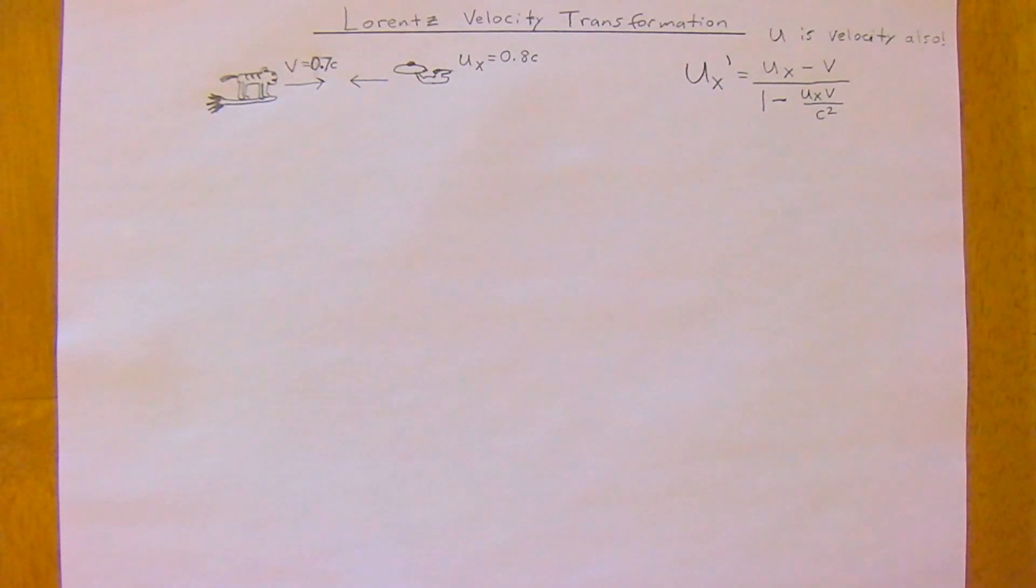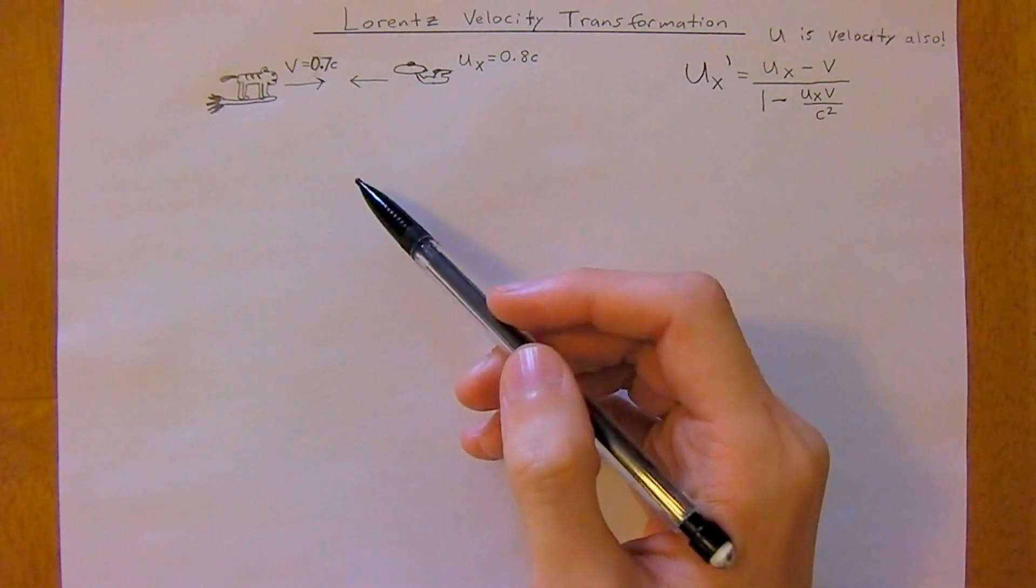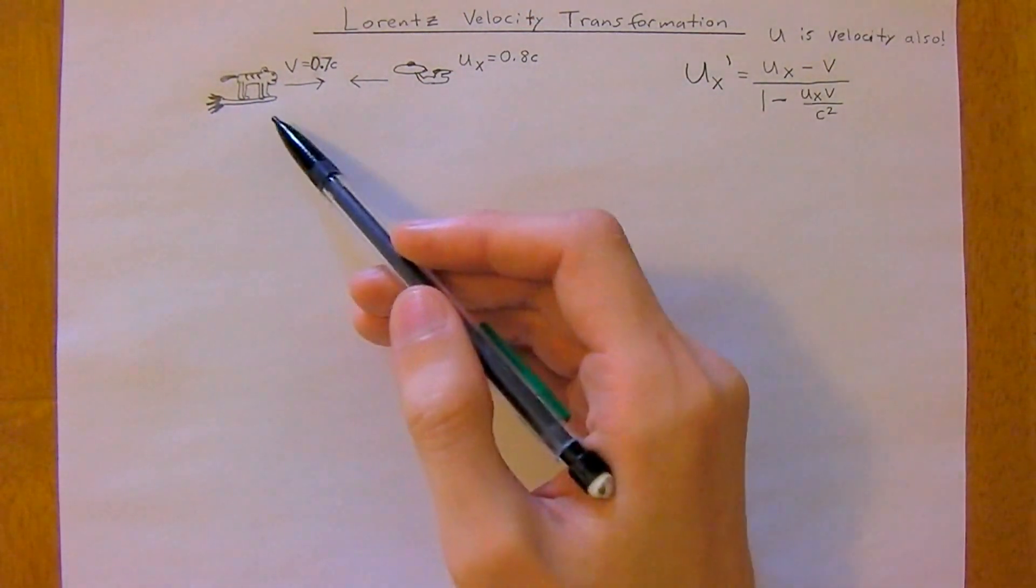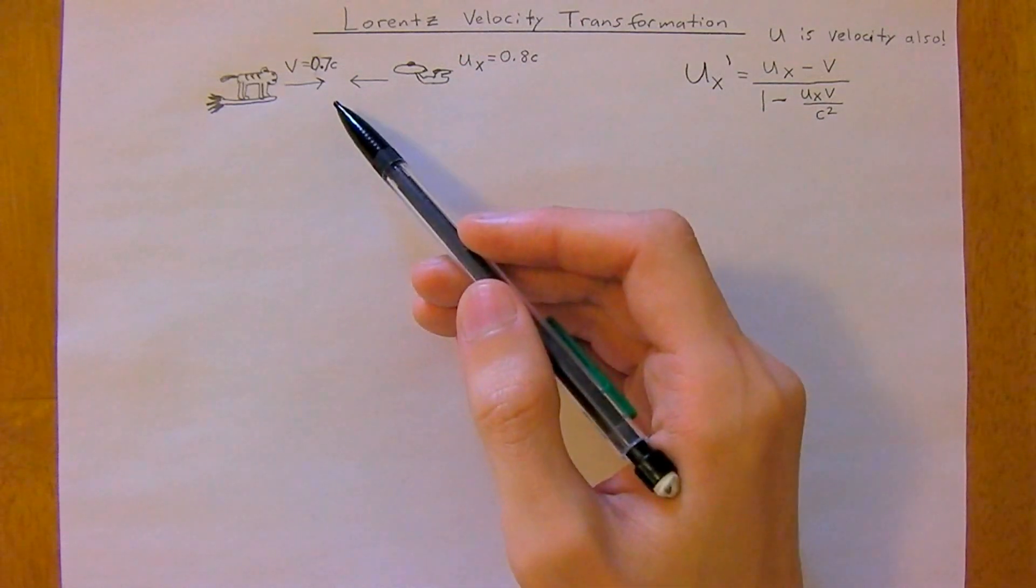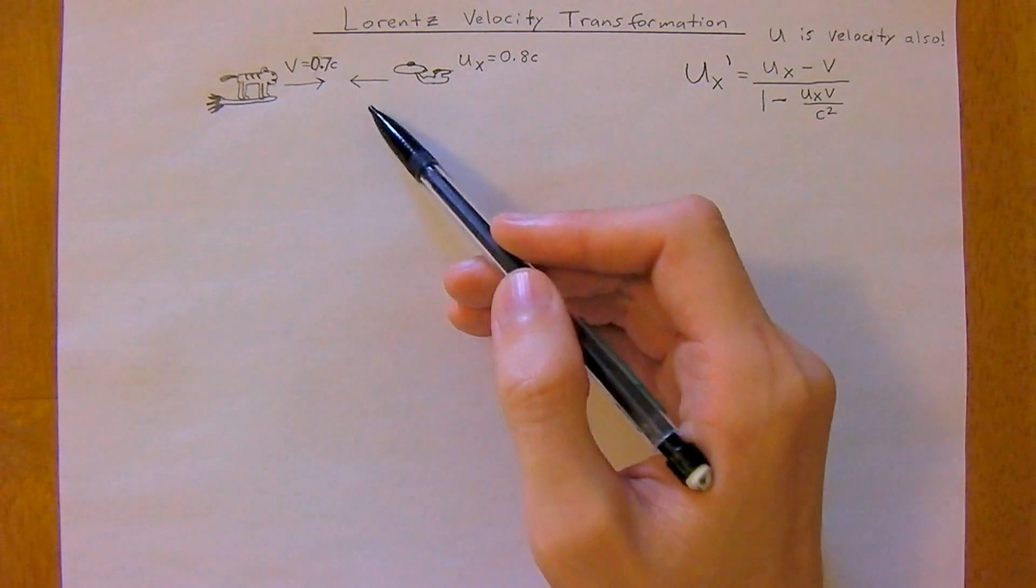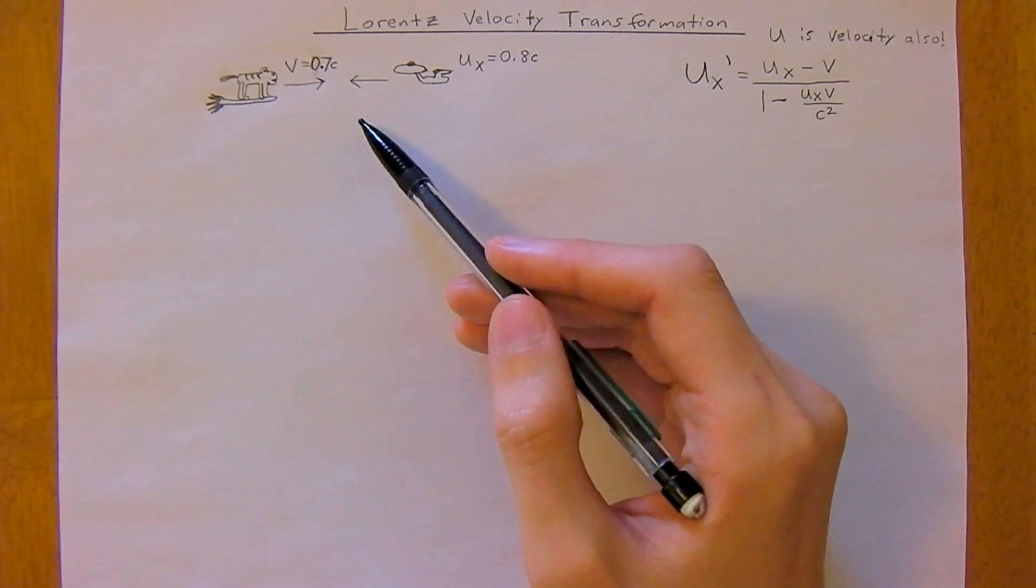In this example we're going to start talking about the Lorentz Velocity transformation. We've got a cat flying on a broomstick to the right headed towards the Starship Enterprise which is flying to the left. These two objects are headed towards each other.